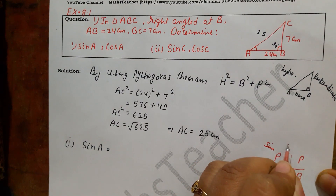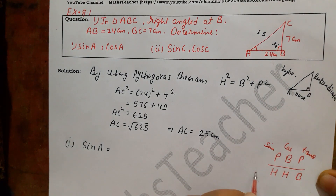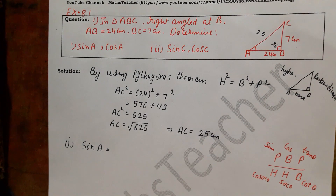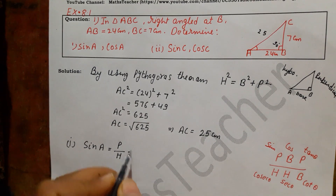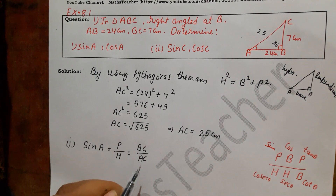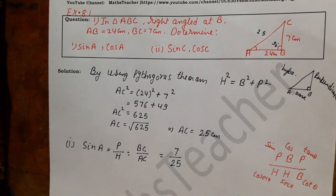So: sin theta is P upon H, cos theta is B upon H, tan theta is P upon B. And their reciprocals: cosec is H upon P, sec is H upon B, cot is B upon P. So sin A equals perpendicular upon hypotenuse. Perpendicular is BC and hypotenuse is AC. BC is 7 and AC is 25, so sin A equals 7 upon 25.